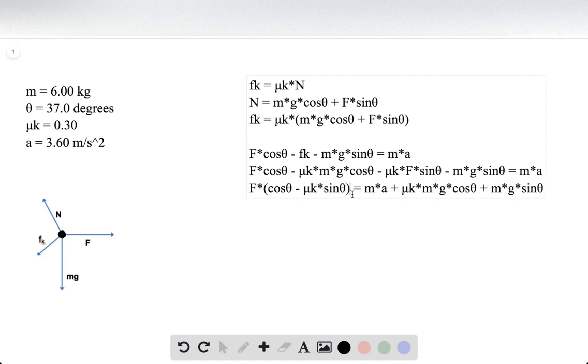Finally, to solve for F, divide both sides by this entire term. This looks messy, but all these are known variables: m is 6, acceleration is 3.6, mu K is 0.3, g is 9.8, and theta is 37 degrees. When we plug everything in, we find F equals 115 newtons.